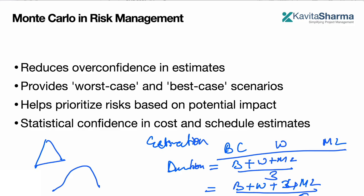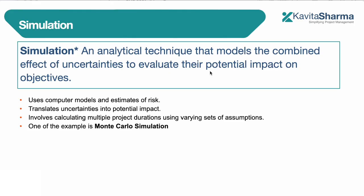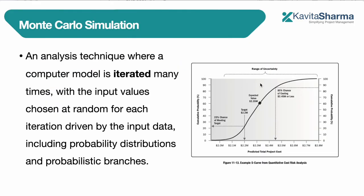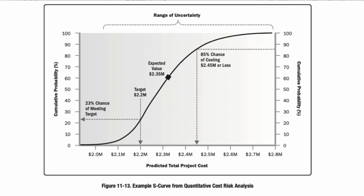Monte Carlo analysis goes further than that. You write down the best case, worst case, and most likely data, and the software works with that data. The Monte Carlo algorithm does permutation and combination of worst case and best case thousands of times to give you an outcome. A computer model is iterated many times with the input values, running many probability distributions and probability branches, and you get a result.